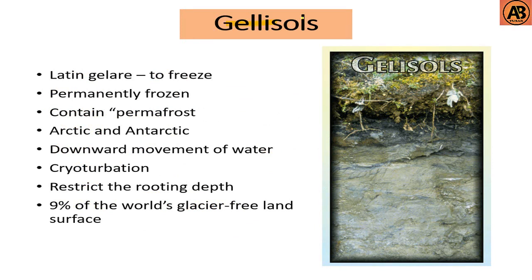The last soil order is Gelisols. Gelisols come from the Latin word gelare, meaning to freeze. They are soils that are permanently frozen or contain permafrost, or contain evidence of permafrost near the soil surface. Gelisols are found in the Arctic and Antarctic. Permafrost influences land use through its effect on the downward movement of water. Cryoturbation such as frost heaving occurs in this order. They restrict rooting depth and occupy about 9% of the glacier-free land surface.